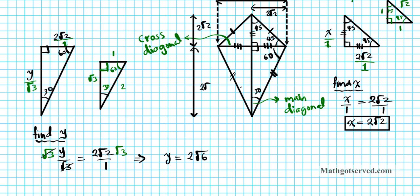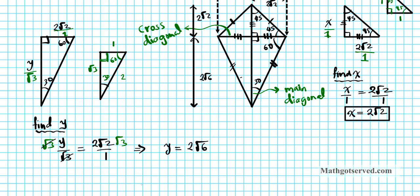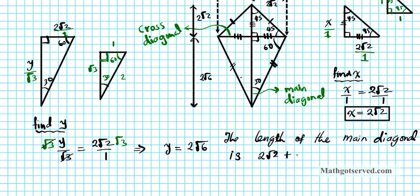So the final answer: the length of the main diagonal is simply the sum of the two portions — 2 root 2 plus 2 root 6. You can't combine these since the radicals are different, so you keep them separate. That's your final answer to question 1.